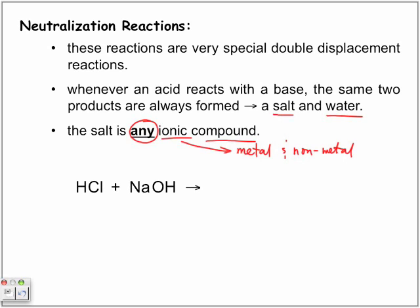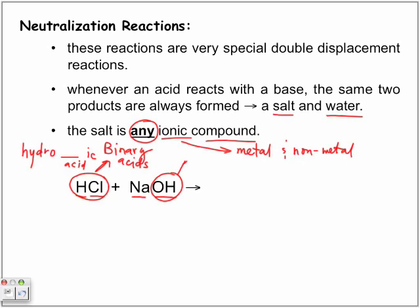Here we have an example: HCl plus NaOH. We have here our acid — this goes back to what type of acid? We have here a binary acid. Binary acids start by using the name 'hydro,' giving us hydrochloric acid. And we have sodium hydroxide, where the hydroxide is what constitutes a base. Hydrogen is not really considered a metal, but we're going to treat it as a cation — H plus.